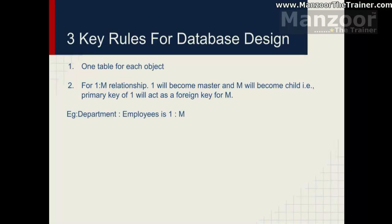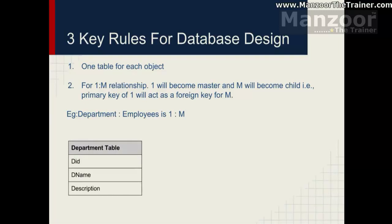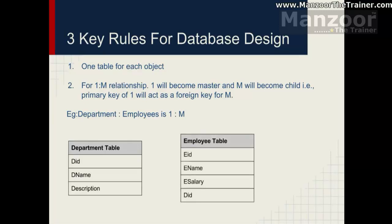For example, department and employee: one department can have many employees, but one employee cannot belong to multiple departments at the same time. So department gets a table with department ID, department name, and description. Employee gets a table with employee ID, employee name, employee salary, and department ID as a foreign key — because department is the one side and employee is the many side.